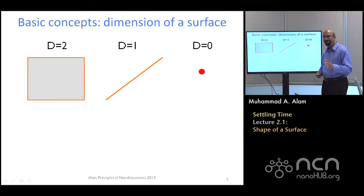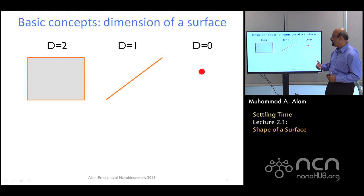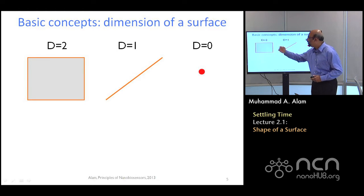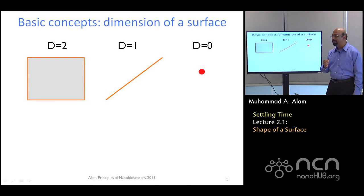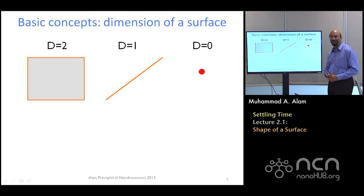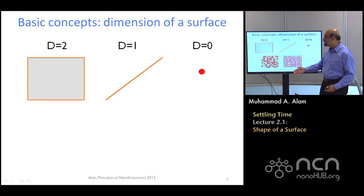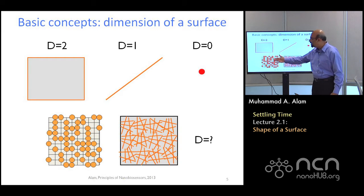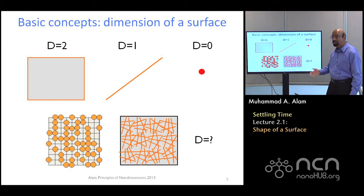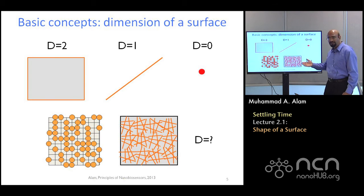If you have taken a geometry class in high school, your teacher may have channeled Euclid to tell you a surface is two-dimensional, a line is one-dimensional, and a point is a zero-dimensional object. You may not have questioned that because it seems so obvious. But think about it: if you had instead a collection of disks — nanodots randomly scattered on a surface — or a collection of sticks or nanowires, what dimension would the surface actually be?